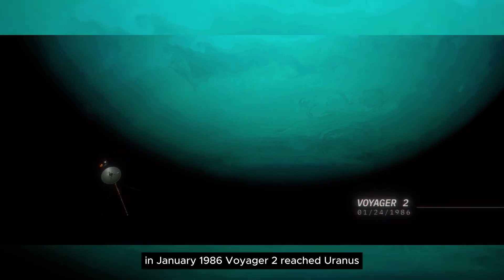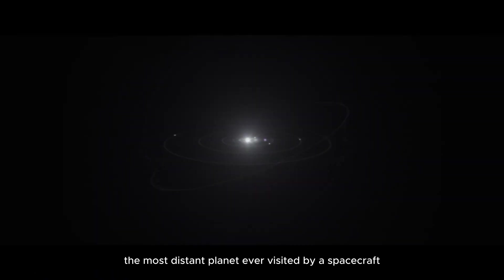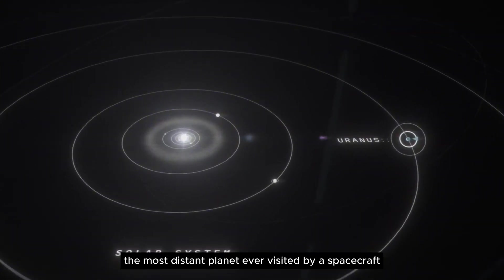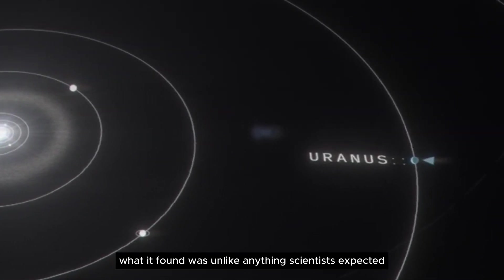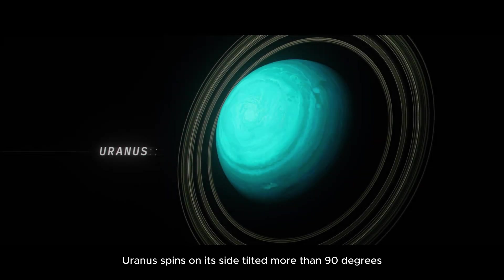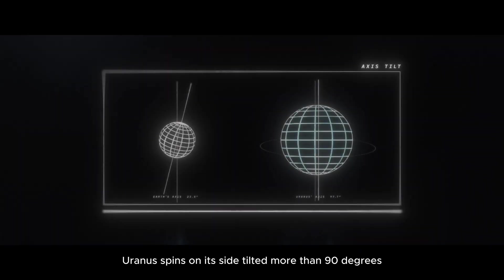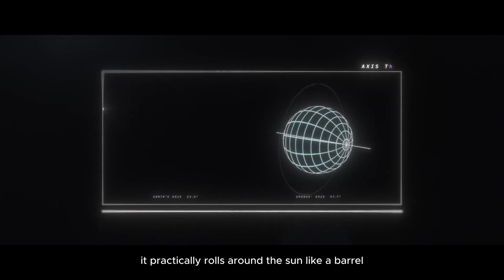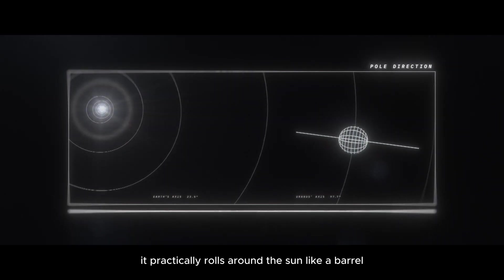In January 1986, Voyager 2 reached Uranus, the most distant planet ever visited by a spacecraft. What it found was unlike anything scientists expected. Uranus spins on its side, tilted more than 90 degrees. It practically rolls around the sun like a barrel.